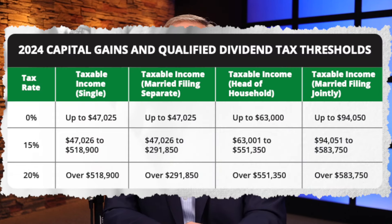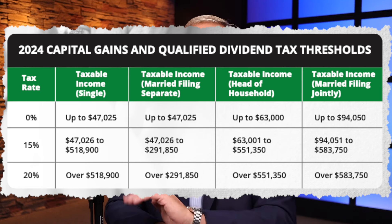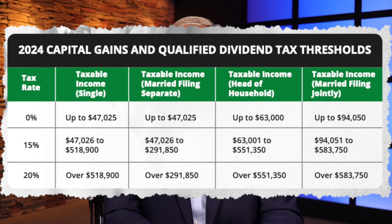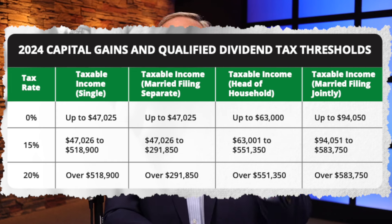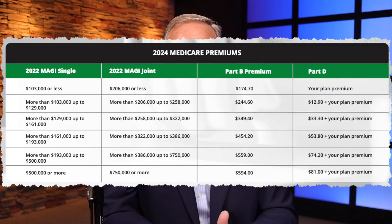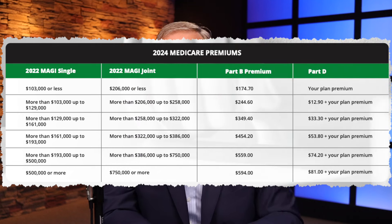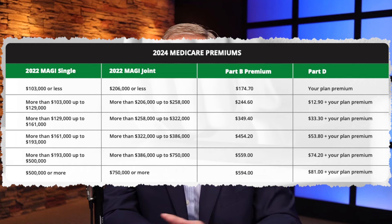Two of the last pieces I'll highlight on the retirement planning charts are the capital gains and qualified dividends thresholds. This is the one that I wish everyone knew, but a lot of people don't. If you are married filing jointly, you can have a taxable income of just over $94,000 without paying any taxes on capital gains. I've seen so many people with capital gains and income under the thresholds just let this go by year after year without knowing about this 0% capital gains rate. The other extremely useful piece is the 2024 Medicare premiums, and specifically the income-related monthly adjustment amount, or IRMAA. You'll see it in the chart — it's fairly easy to read.